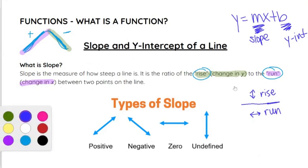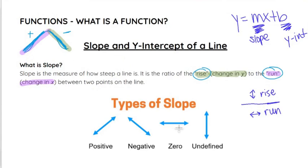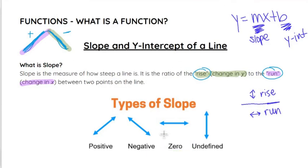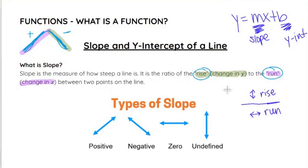There are two special cases of types of slope. The first one is a slope of zero. If we have a horizontal line, that is going to be a slope of zero. If you think about it in the concept of a hill — if it does not rise, it doesn't go up or down, it is not a hill. It has no slope, no increase or decrease.